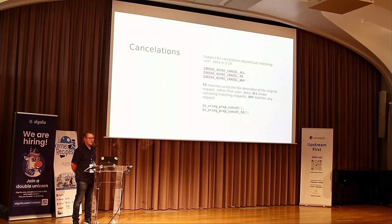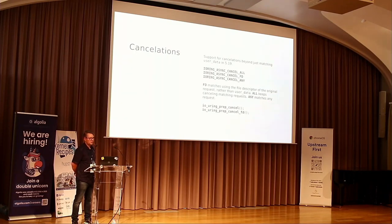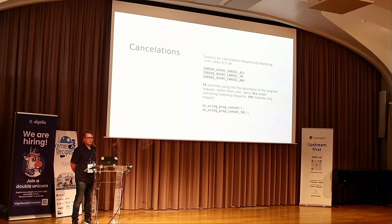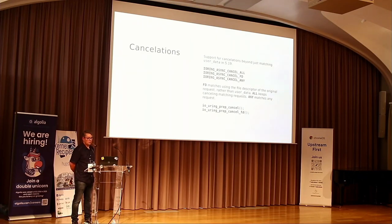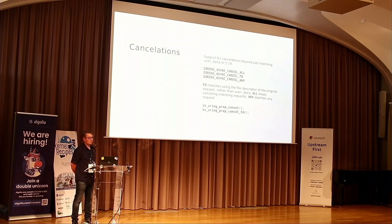We support a wide range of cancellations extended in 5.19. The user data assigned with the submission queue entry is how you key cancellations in io_uring. That gets awkward if you have multiple requests pending for a specific file or socket that's being closed and you want to cancel everything associated with it. The previous cancellation was user-data based only — cancel one at a time. Now we support cancellation by all, any, and FD — you can cancel everything matching a given FD or everything on a specific ring.